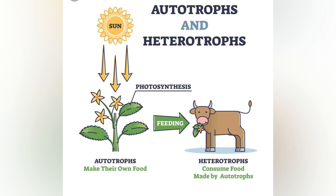Heterotrophs represent one of the two mechanisms of nutrition, the other being autotrophs. Autotrophs use energy from sunlight or oxidation of inorganic compounds to convert inorganic carbon dioxide to organic carbon compounds and energy to sustain their life. In basic terms, heterotrophs eat either autotrophs or other heterotrophs, or both.